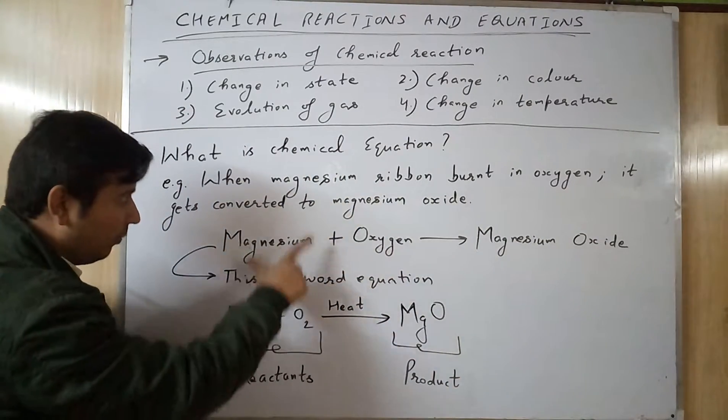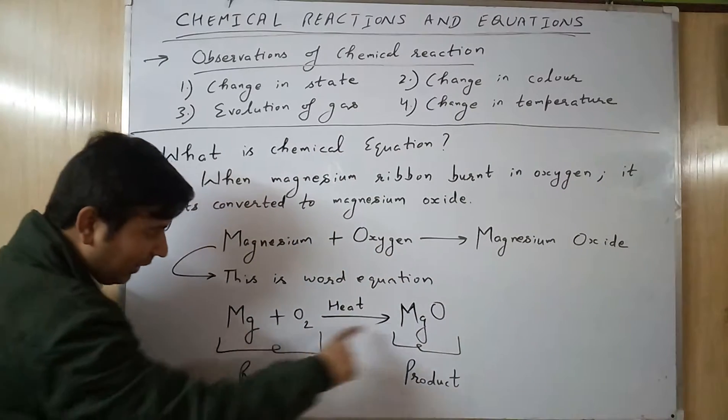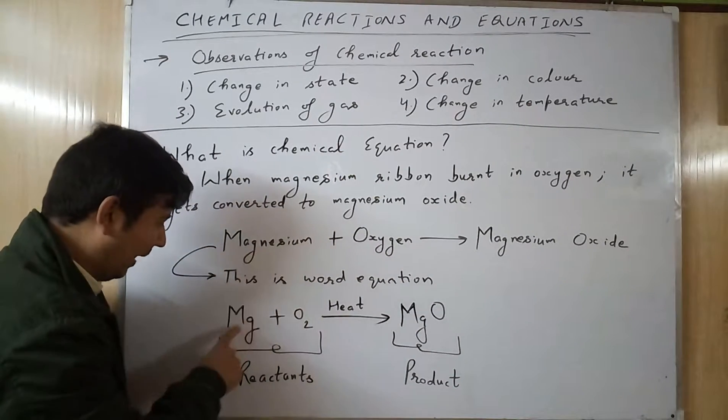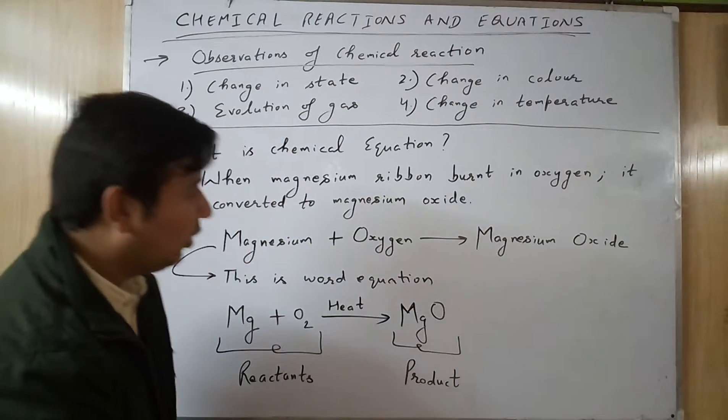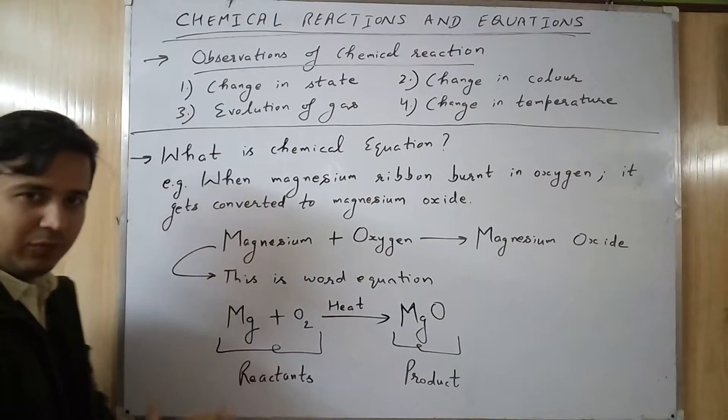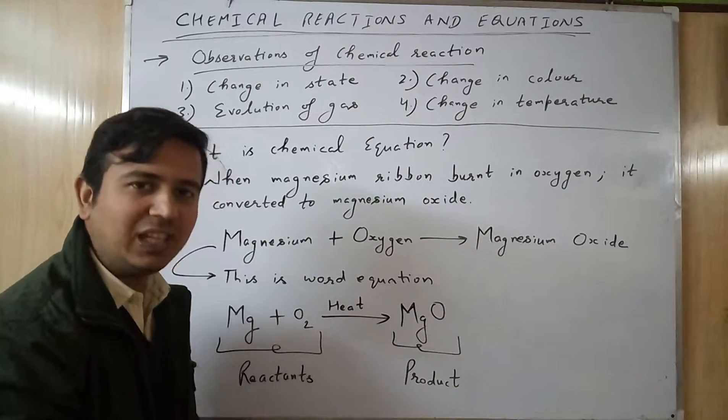Now you know, but what is a chemical equation? This is a chemical equation - the symbols like Mg for magnesium, O2 for oxygen, and MgO for magnesium oxide. And one more thing: what are reactants and products?